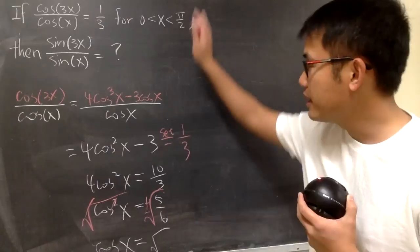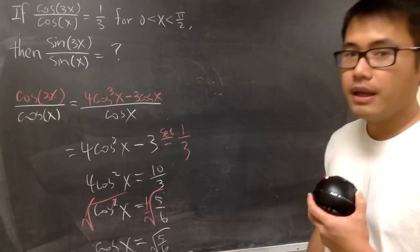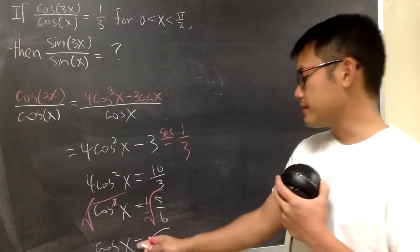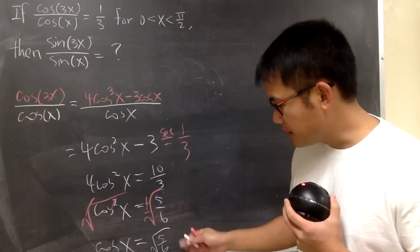Once again, x is in the first quadrant. Let me just leave it as how it is. Now we know cos(x) is equal to square root of 5 over 6, like this.